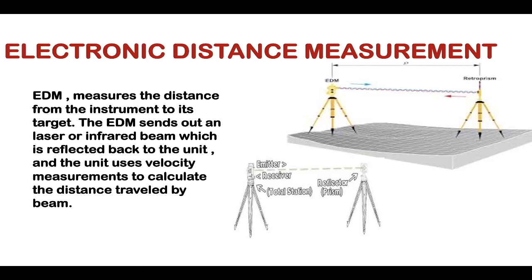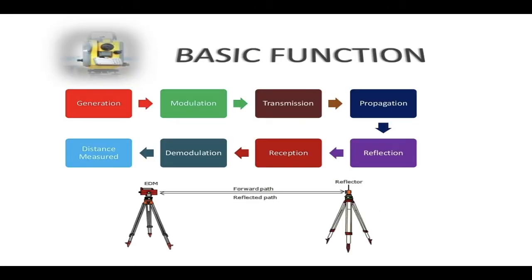The advantage of using EDM is speed and accuracy in measurement, and several obstacles to chaining are automatically overcome when these instruments are used. EDM is placed at the first point and the reflector is placed on the other end. In this function we have a forward path and a reflected path.